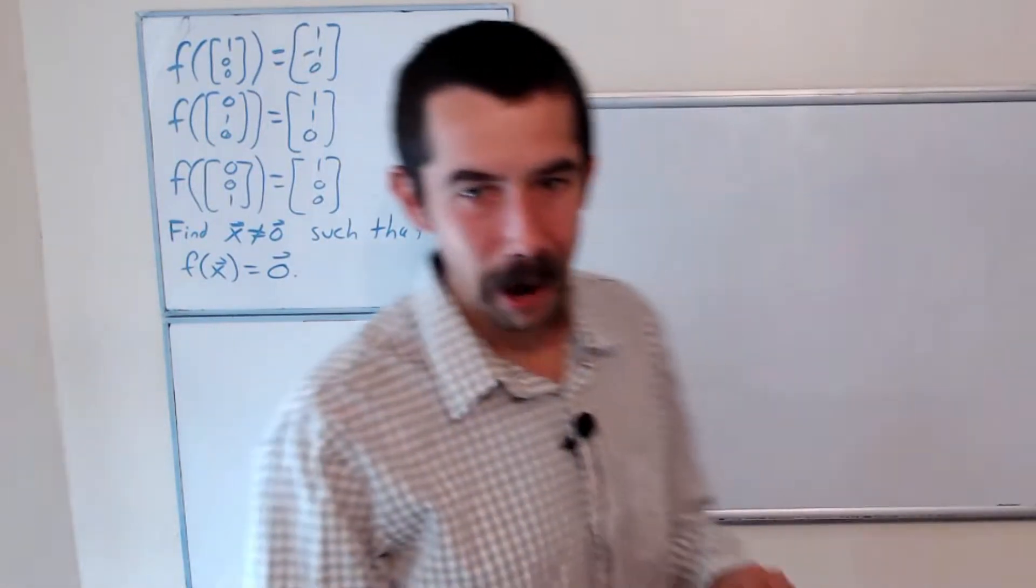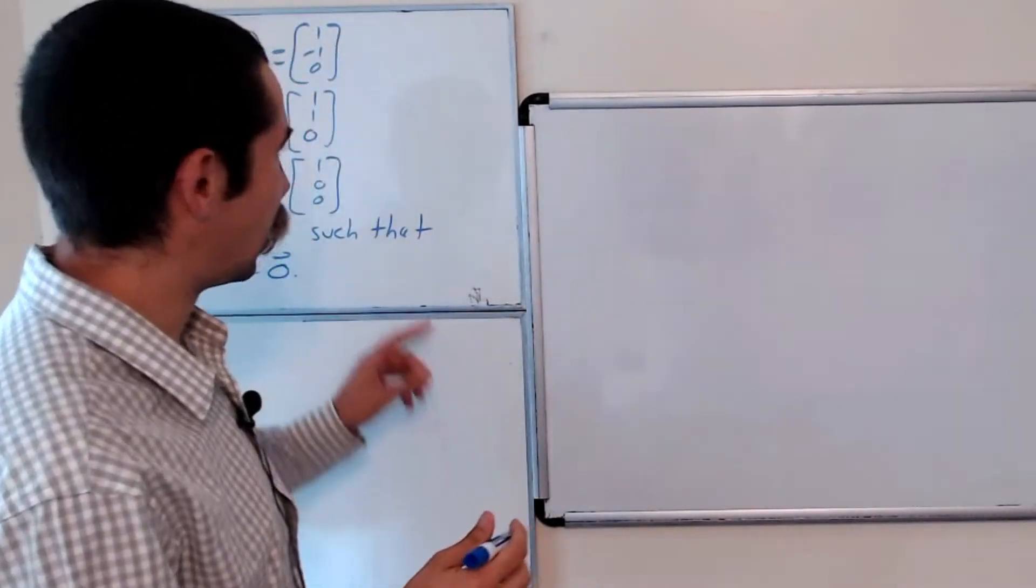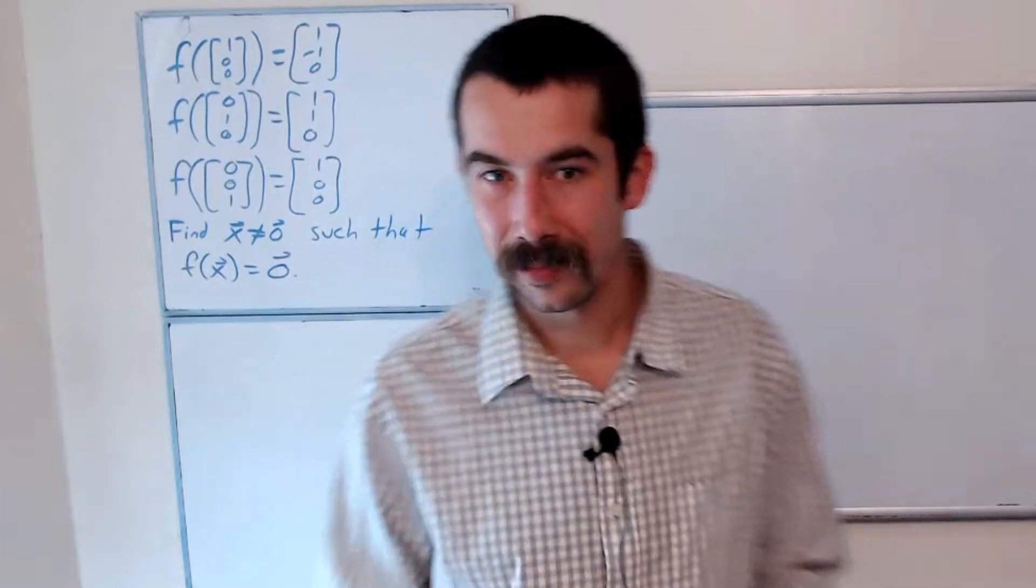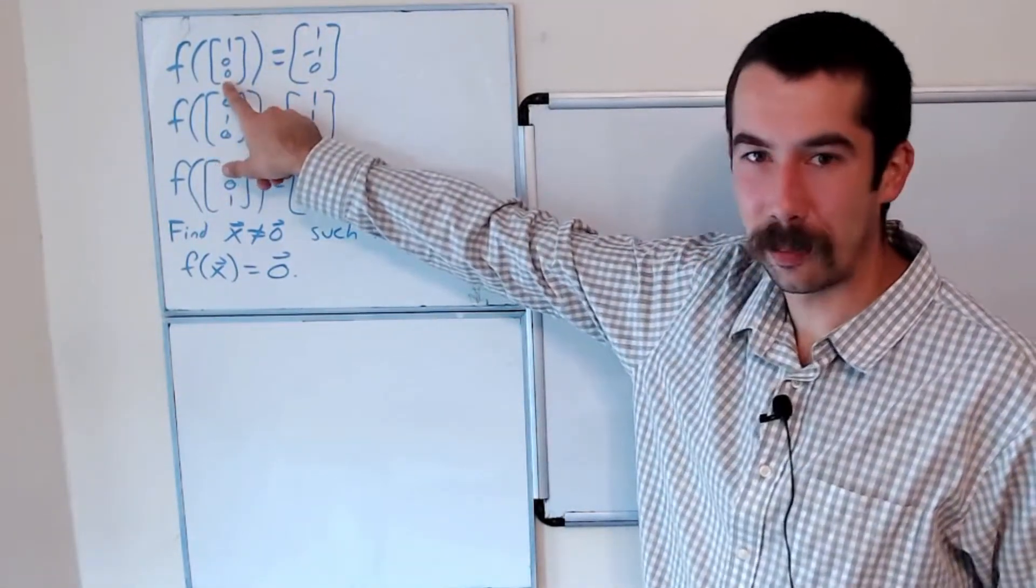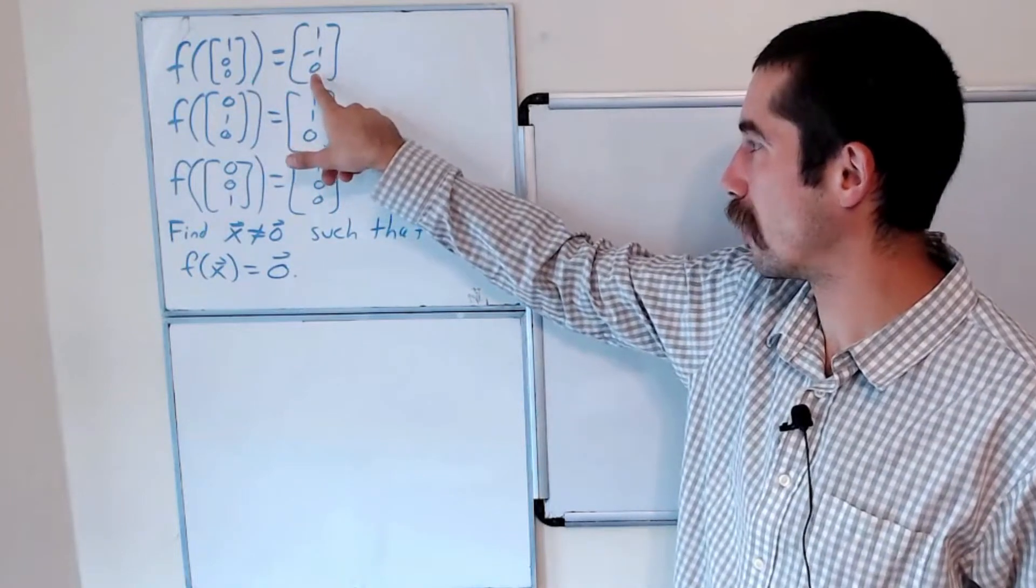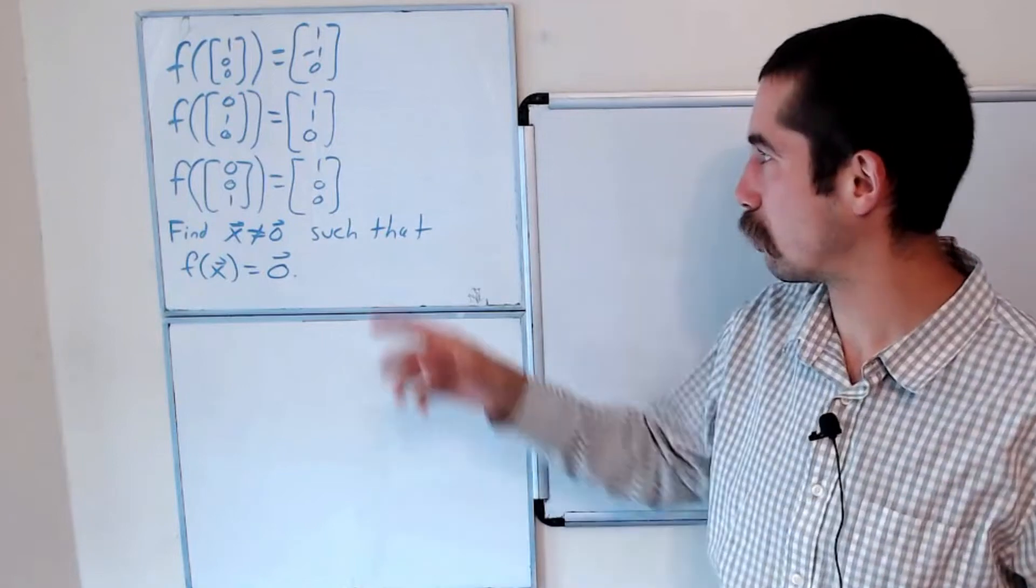Okay, so how would we solve this? Well, our information that was given tells us that the first elementary basis vector gets sent to (1,-1,0). So that's the first column of the matrix of our transformation.